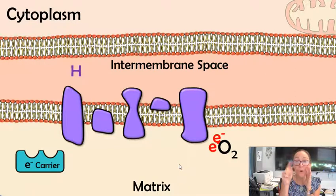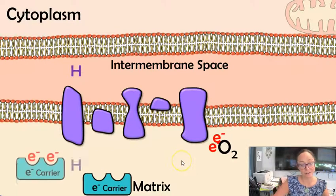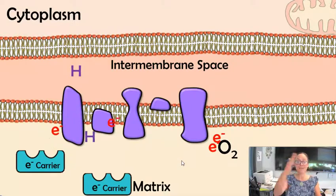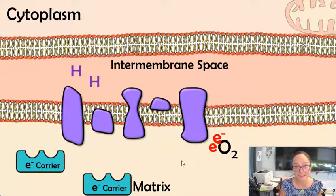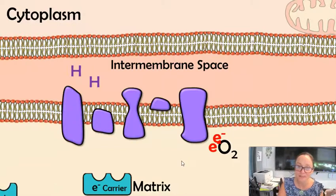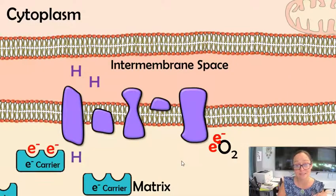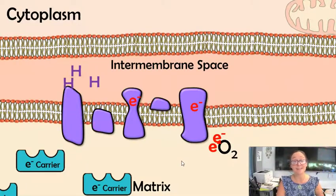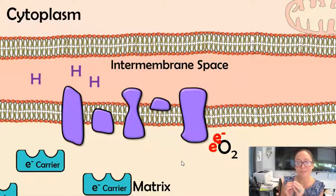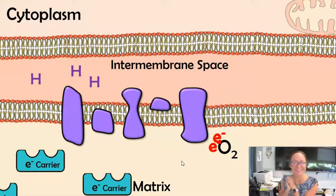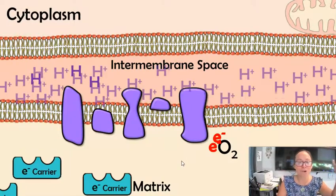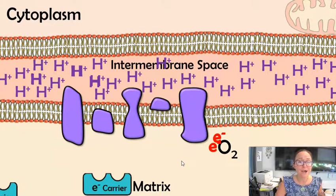Technically there should be a single O negative there. The electron carrier is now open and can be used again. The next electron carrier comes and donates its electrons in. Notice the hydrogen gets pumped up into the intermembrane space. When electron carriers donate their electrons into the ETC, it pumps the hydrogen ions into the intermembrane space. All of the electron carriers produced earlier bring their electrons and hydrogens to the electron transport chain.